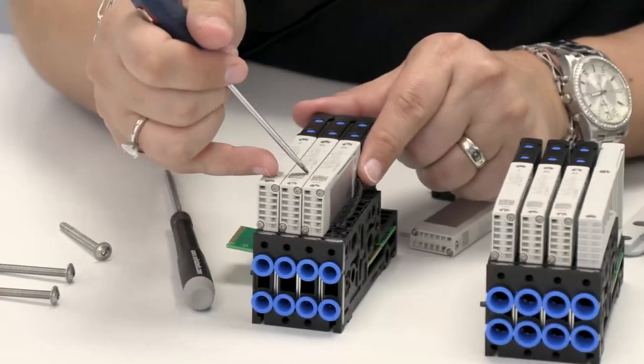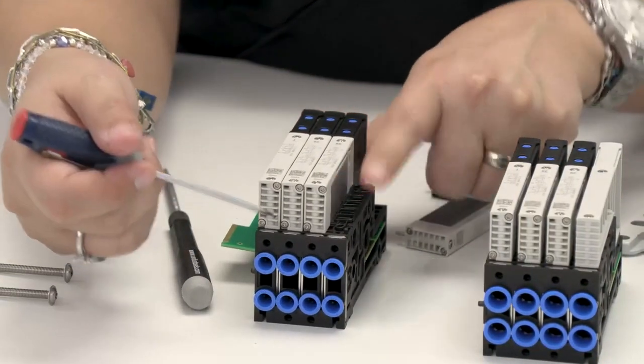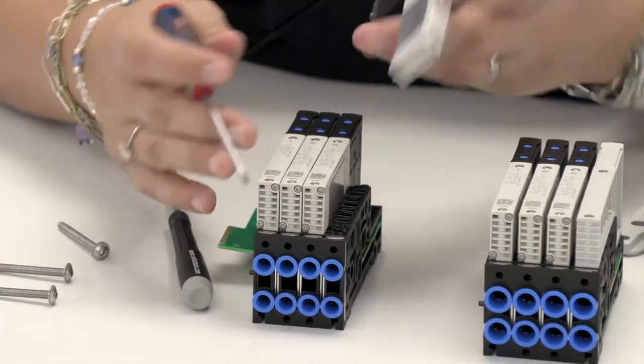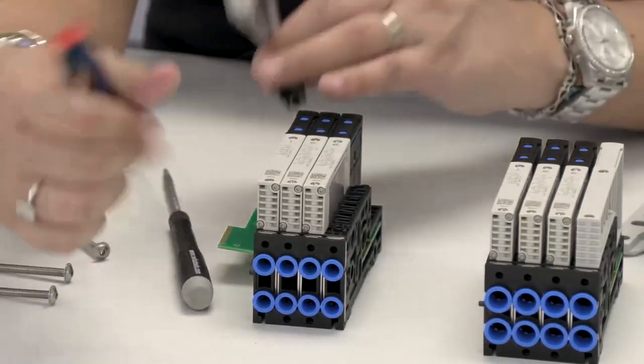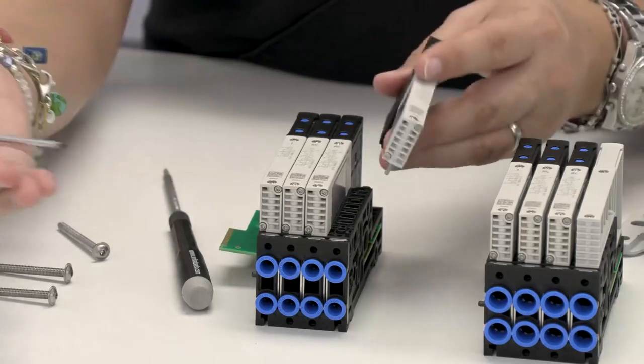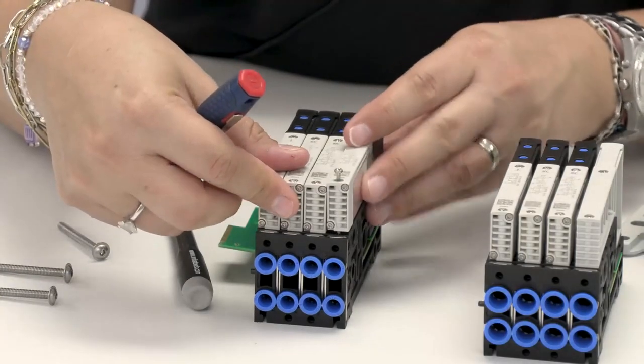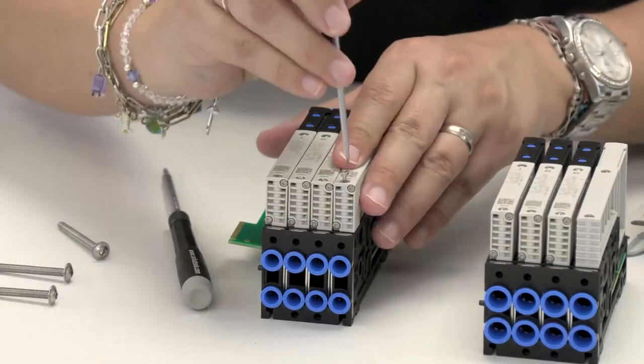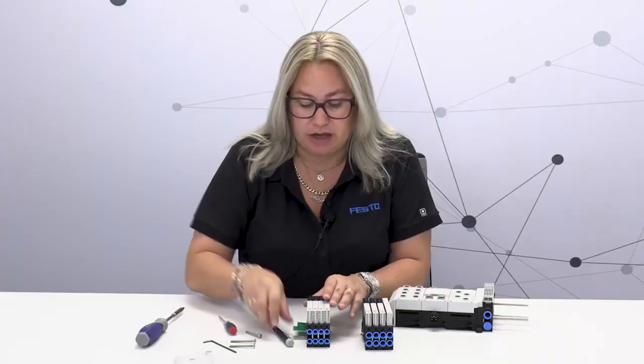In this case we have a sub base that has four valves but you can also scale it up to one. We chose the four and when you choose a four station you're going to get cost savings because it's less parts that you're working with. Those cost savings will translate directly to the machines that you're building.